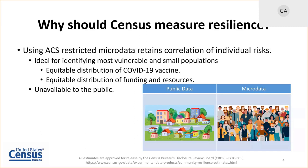We can find out there's a person in that microdata who is perhaps living in poverty, does not have a high school diploma, is living with a disability, or is over the age of 65. We can retain all of those correlations of individual risk. That type of data is ideal for identifying the most vulnerable and small populations across the U.S., and is great for equitable distribution of the COVID-19 vaccine as well as equitable distribution of funding and resources.